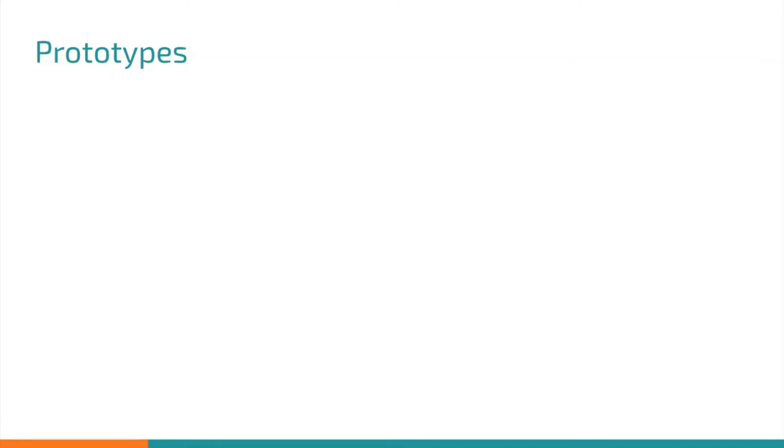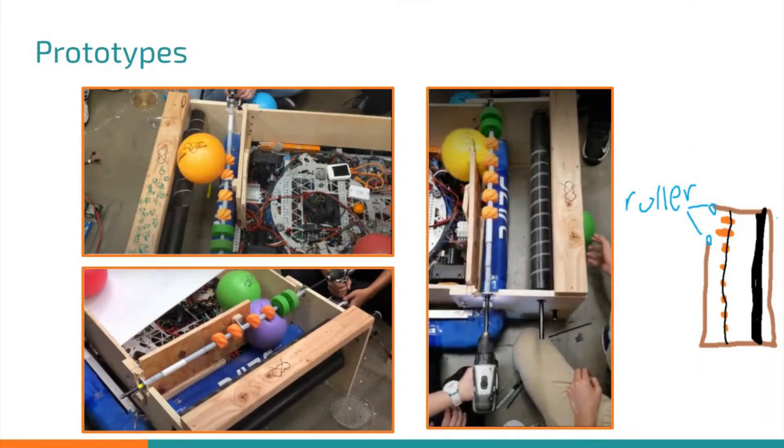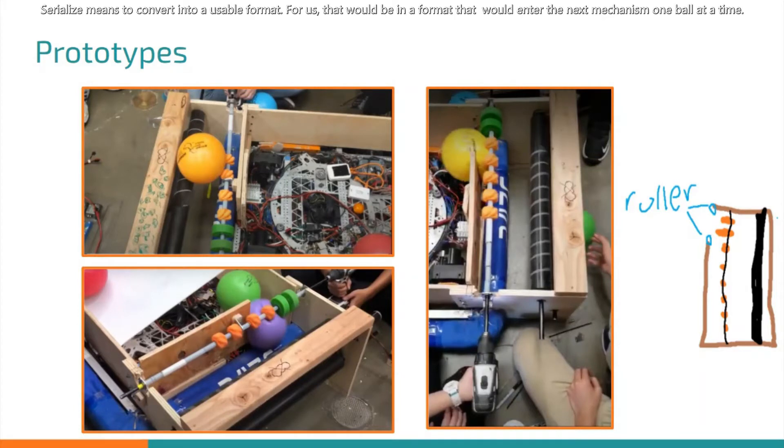The next prototype is the mecanum intake. It consisted of two rollers and mecanum wheels that would slide the ball to the right, where it would be taken in by the two larger green grippy wheels. Originally, we believed that our intake would have to serialize the balls, so this was our front running design because of its consistency and reliability.